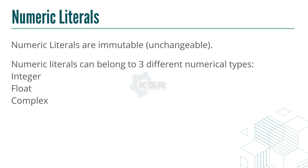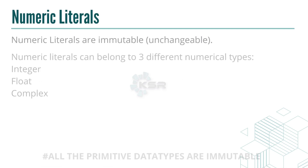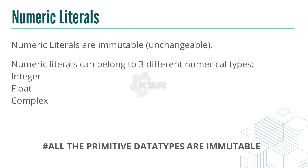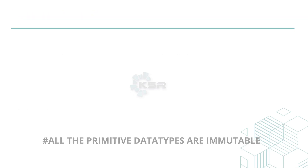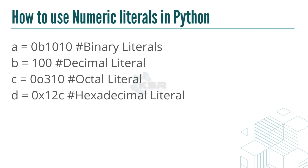Numeric literals, or numeric data types, are immutable — in fact, all primitive data types are immutable. Numeric literals belong to three types: integer, float, and complex. Examples like 'a = 10' or 'b = 15' are decimal integers, which are base 10.